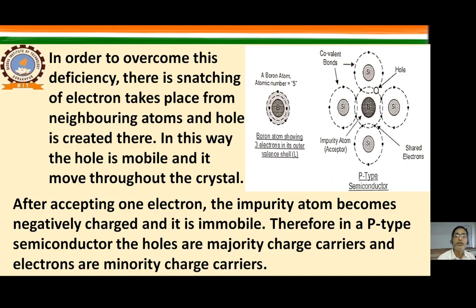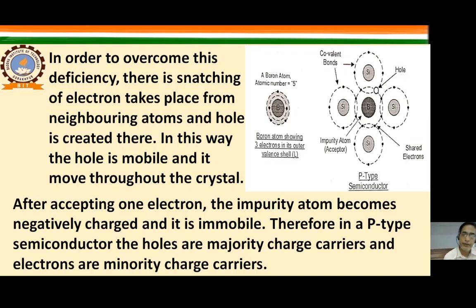This deficiency of one electron creates a hole. In order to overcome this deficiency, snatching of electrons takes place from neighboring atoms, and a hole is created there. In this way the hole is mobile and moves throughout the crystal.